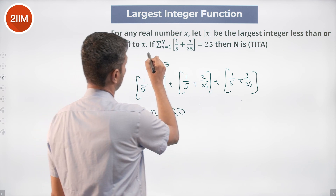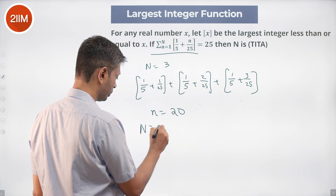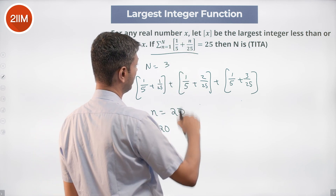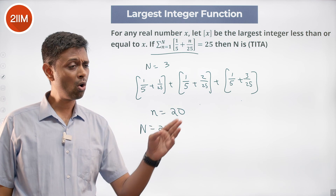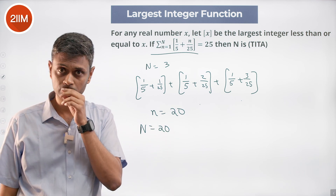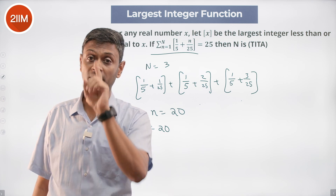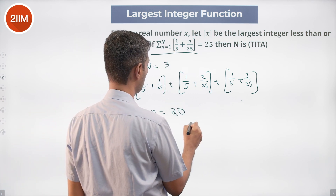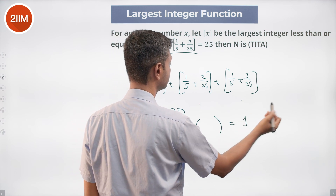If I put capital N equal to 20: floor(1/5 + 1/25), floor(1/5 + 2/25), floor(1/5 + 3/25) — all of them will be 0. But floor(1/5 + 20/25) would be 1. So when capital N equals 20, this whole sigma equals 1.